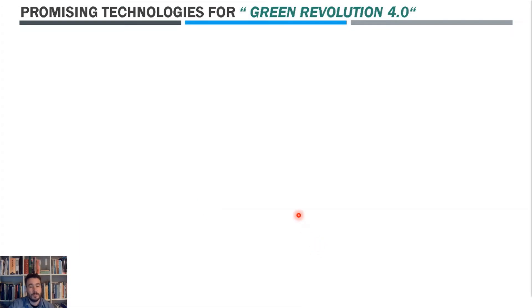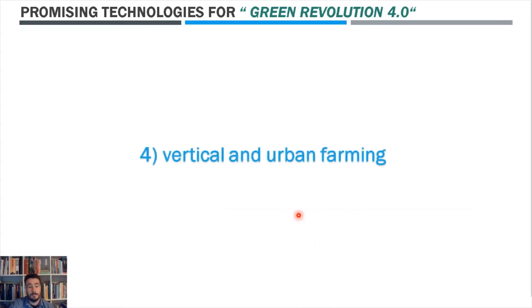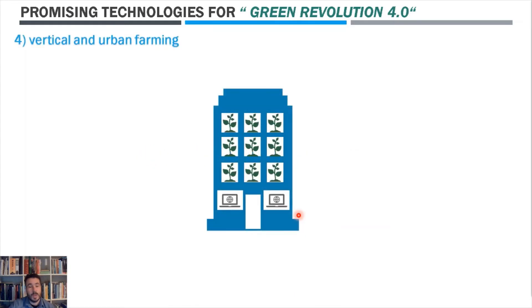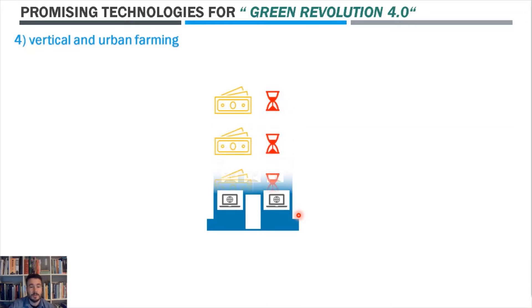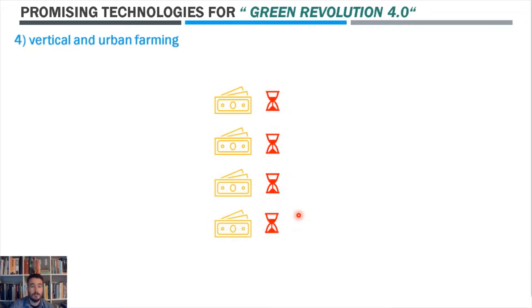The fourth technology is vertical and urban farming — we are talking mainly about hydroponic in-house farming. Disadvantages include contamination of urban soils making them unsuitable for food production, inadequate yield, time-consuming crop management, and the fact that it is still an energetically and financially expensive process.